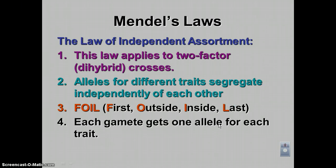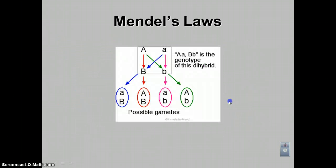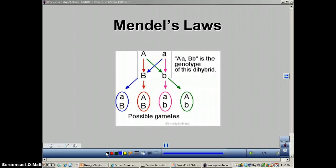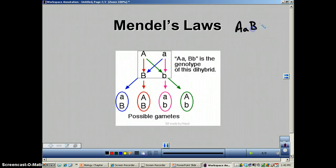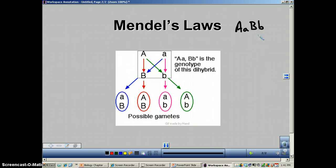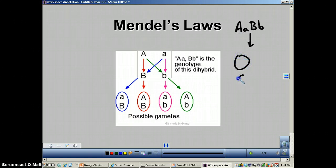Each gamete will get one allele for each trait. Here we've got a picture to explain it. We have an individual that is heterozygous for the first trait and also heterozygous for the second trait, so the genotype would be big A, small a, big B, little b. If you went through meiosis, you're going to get four different gametes, because in meiosis, one makes four.